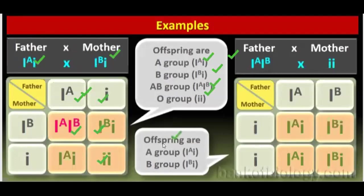Offspring in A blood group are having IA and small i. If we cross F2 — if father's blood group is AB and mother's is O blood group, then the cases will be A blood group and B blood group only, because we have dominant genes from one parent and recessive from the other. If both are dominant, then there is no O blood group in that case.